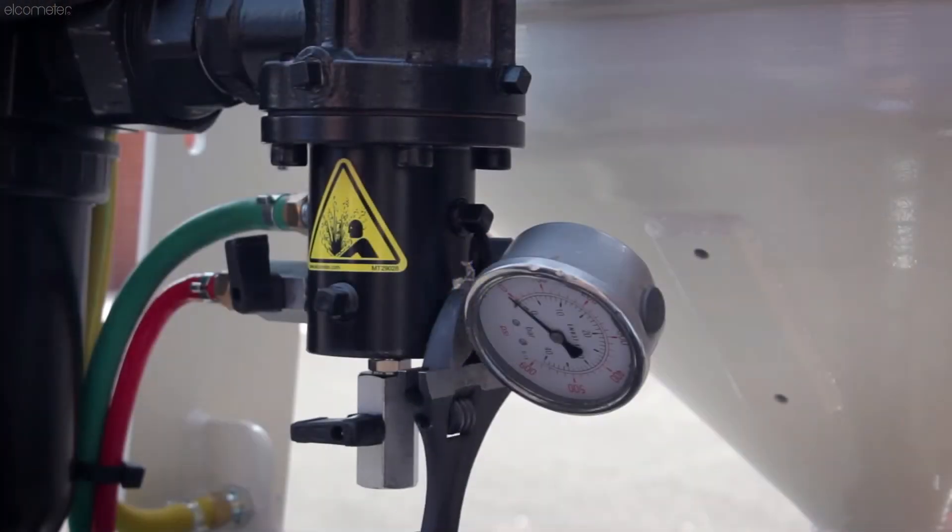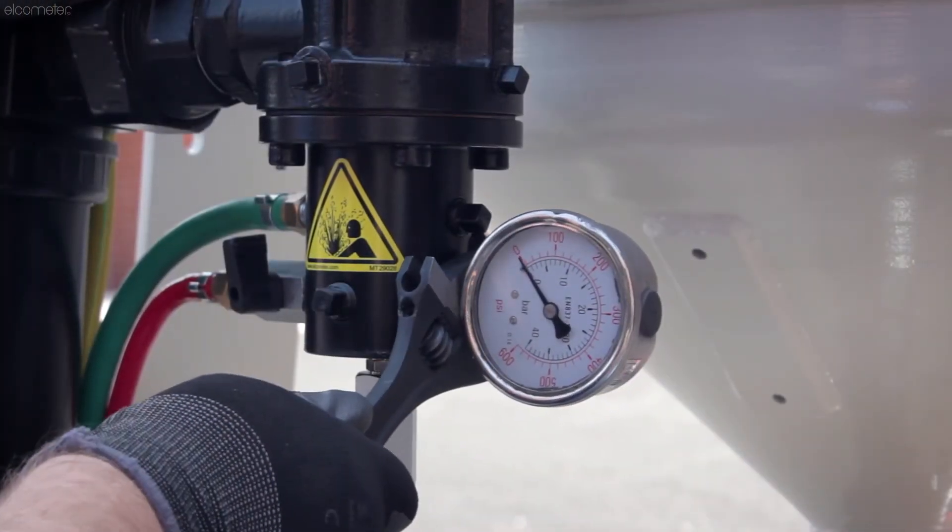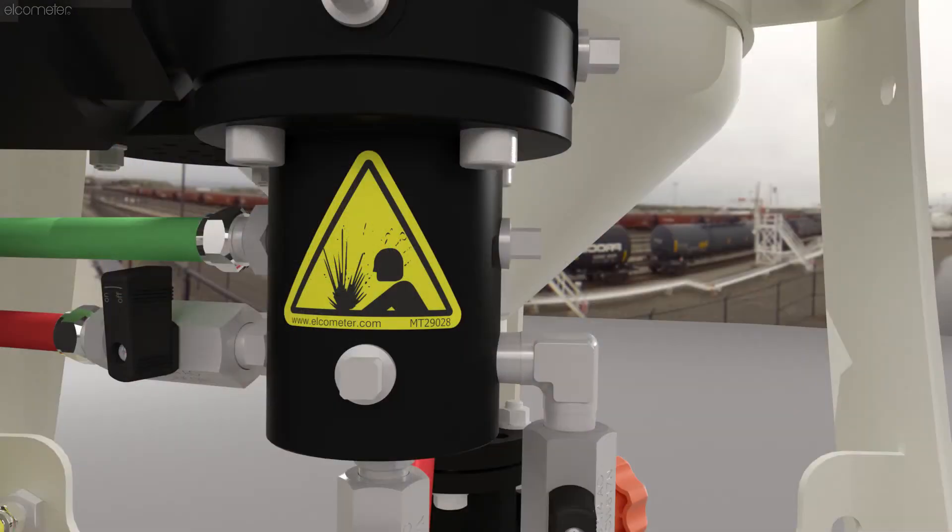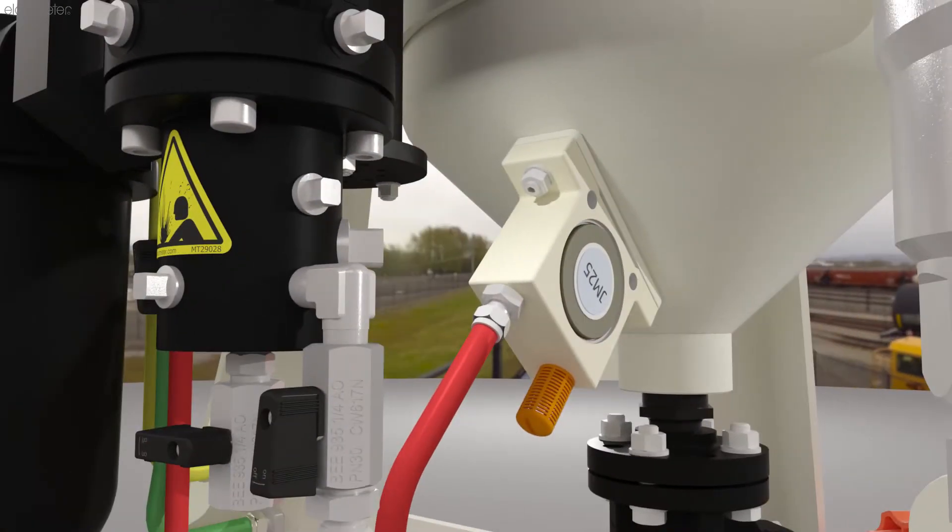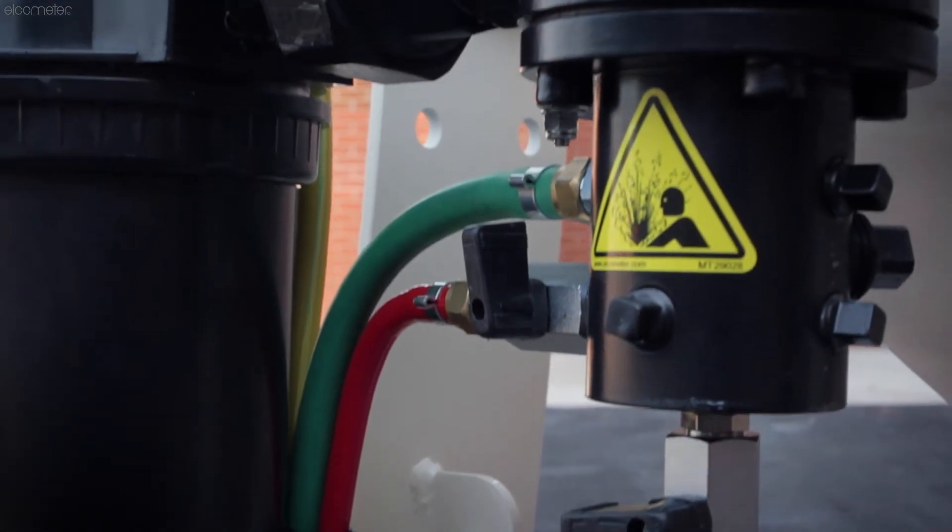This allows you to attach ancillary equipment, such as pressure gauges to monitor your compressed air pressure, air vibration units to fluidize the media flow, and air supply for your breathe air filter.